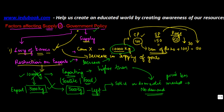Need not necessarily always be that way. If this restriction is lifted, a person who was originally exporting 5,000 kgs may start exporting 10,000 and increase the supply. So it depends on what kind of government policy is followed.